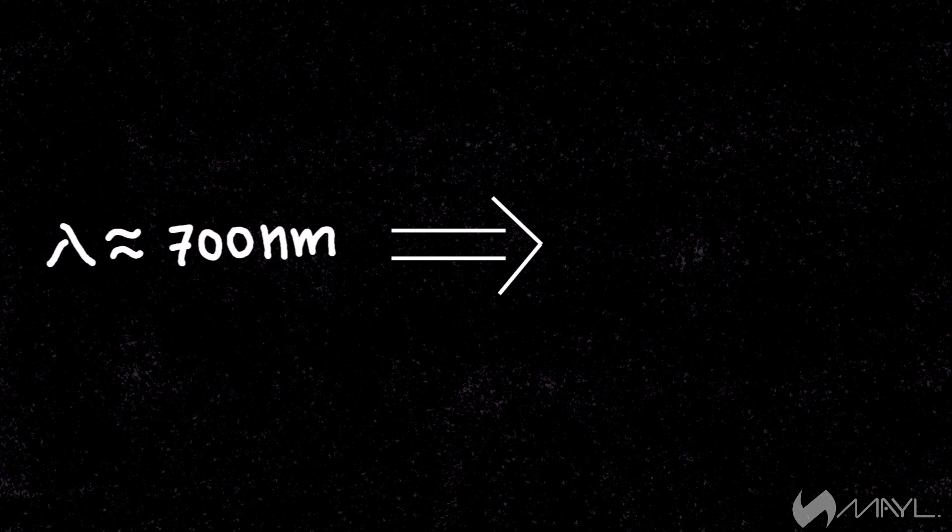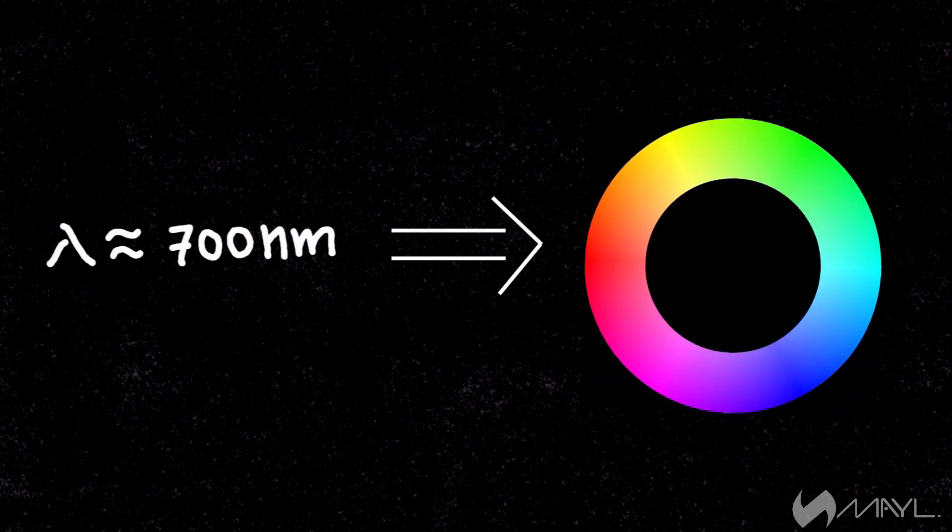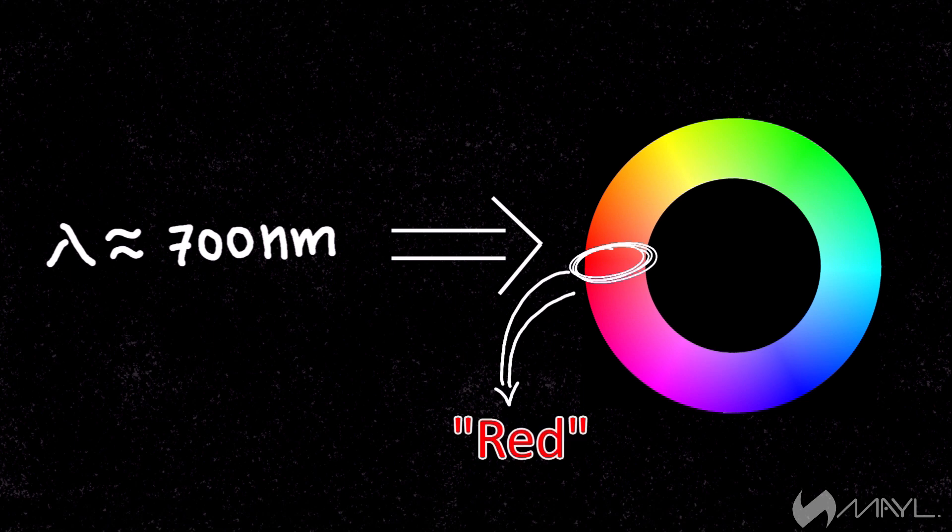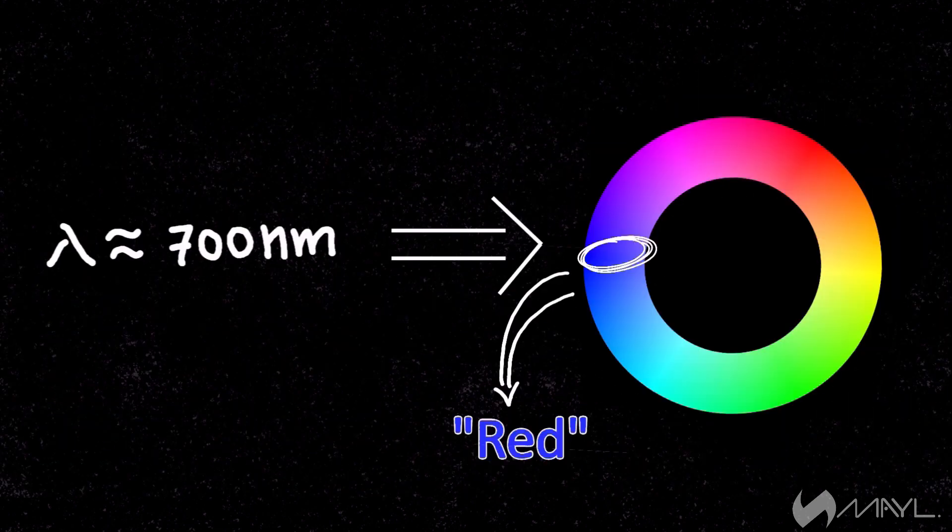Since we all looked at the same wavelength of light for which someone gave a name, we all call that particular wavelength of light the same color. But how that color looks in our head can actually differ.